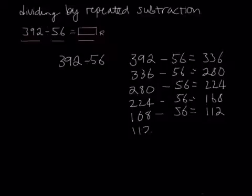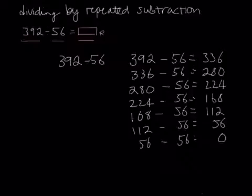112 minus 56 equals 56, and then 56 minus 56 equals 0. Because I've reached 0, or if it was going to be a remainder at a number less than 56 but greater than 0, I know I've finished my algorithm.